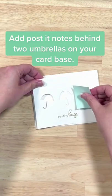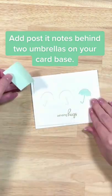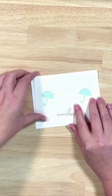The next thing we want is a couple of post-it notes. We're going to use our die cut piece as our template to line up our post-it notes where they need to go behind two of the umbrellas.